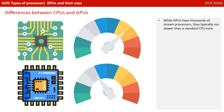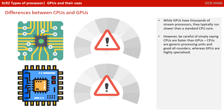While GPUs have thousands of stream processors, they typically tend to run slower than a standard CPU core. However, be very careful of simply saying that CPUs are faster than GPUs. CPUs are generic processing units — they're good all-rounders — whereas GPUs are highly specialised.